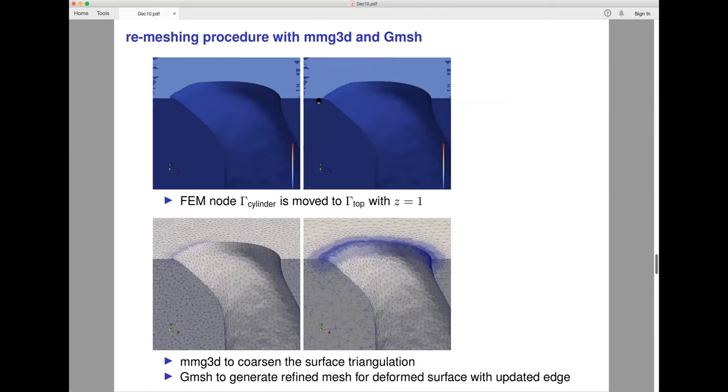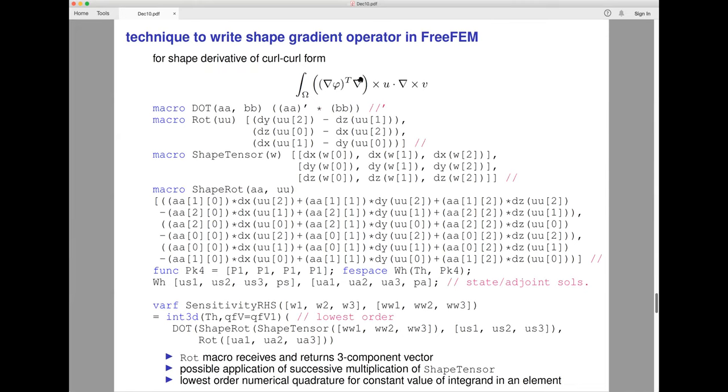The final one is the technique of how to write the gradient operator for the weak form. There are several terms. Unfortunately, using macros for tensors and vectors is not difficult to write. Important is rotation of the curl operator receives three vectors on the returns, and also the tensor can be written by matrix form.